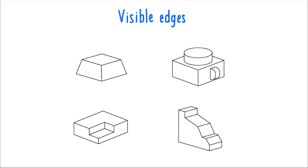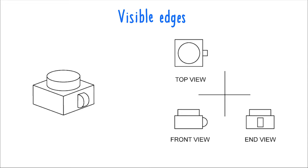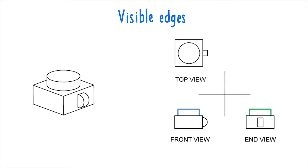In this second object, solid lines depict various protruding elements, like a cylinder on top and a semicircle that sticks out on the side. The cylinder appears rectangular when seen from two of the views — the front and the end — and only appears circular when viewed from the top. Similarly, the semicircle also appears rectangular from the top and end views, and only appears as a semicircle when seen from the front view.